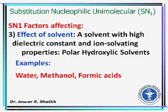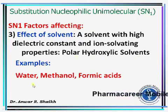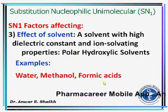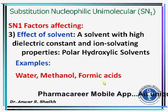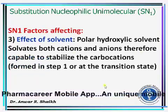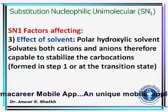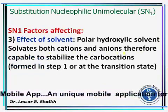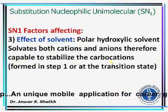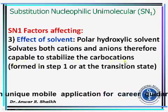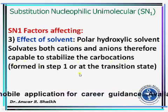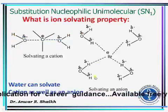A solvent with high dielectric constant and ion-solvating properties will increase the rate of the SN1 reaction. For example, polar hydroxylic solvents like water, methanol, and formic acid will increase the rate of the SN1 reaction. These solvents solvate both cations and anions, therefore they are capable of stabilizing the carbocation which is formed in step 1, at the transition state.